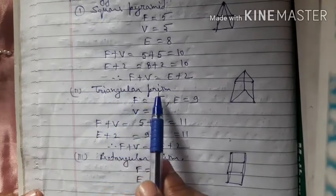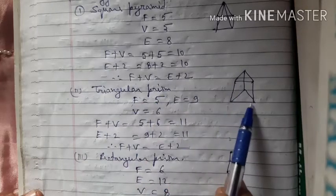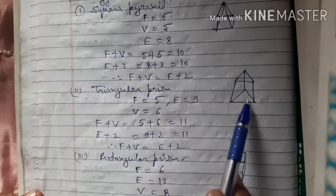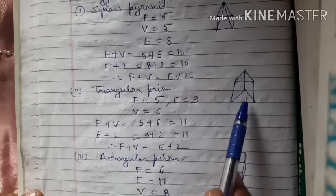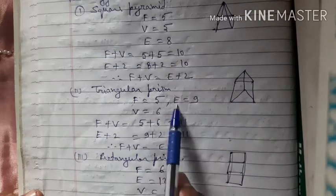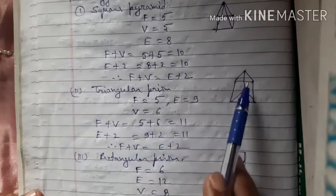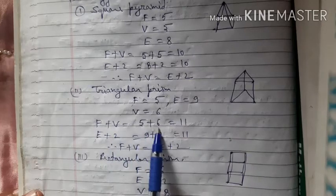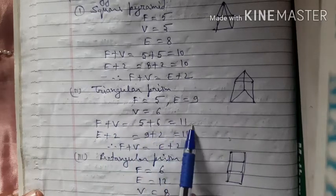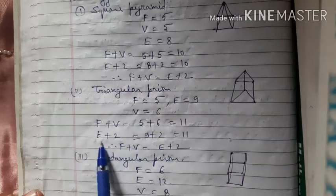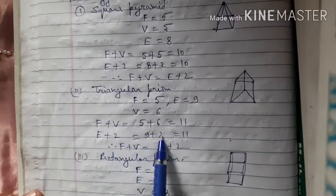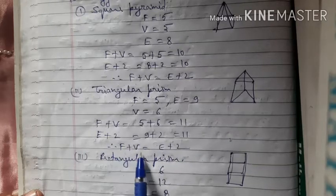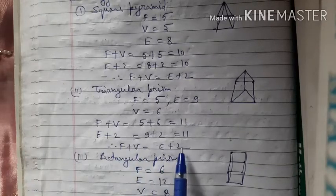For a triangular prism: faces = 5, edges = 9, vertices = 6. F + V = 5 + 6 = 11, and E + 2 = 9 + 2 = 11. Therefore F + V = E + 2 — Euler's formula is verified for the triangular prism.